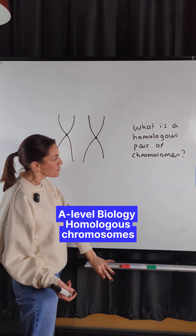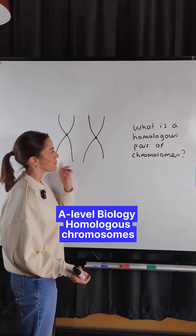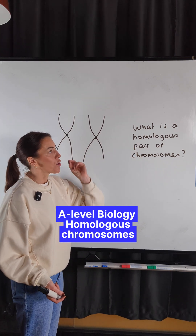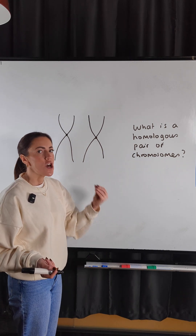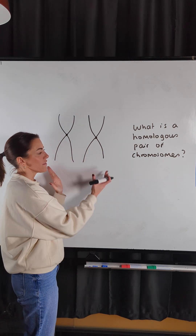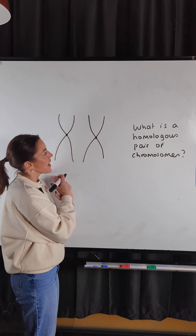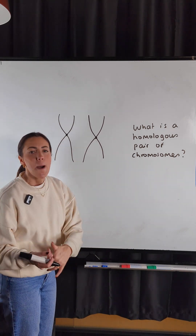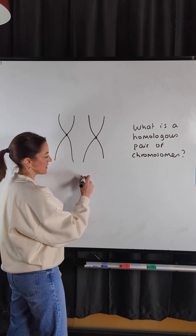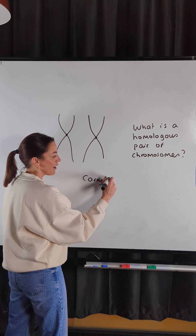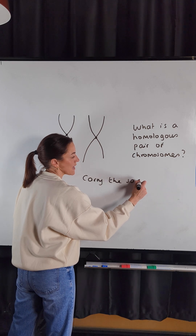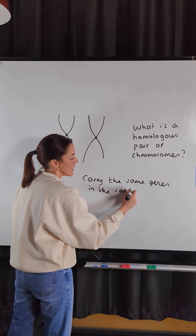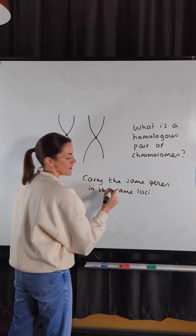Here we have two chromosomes, but not just any two chromosomes — these chromosomes are a homologous pair. So what is a homologous pair of chromosomes? If you look at this homologous pair, they will be the same size, they will be the same length, they look the same. But importantly, they carry the same genes in the same loci — the same location.